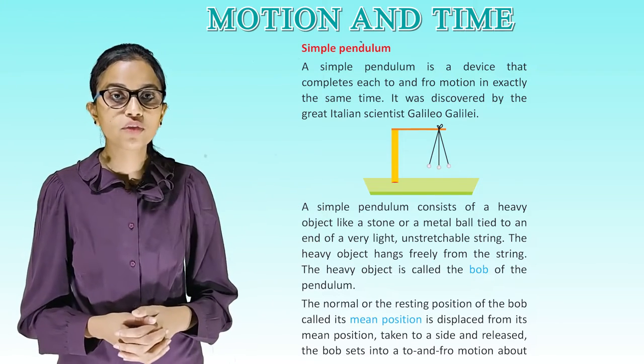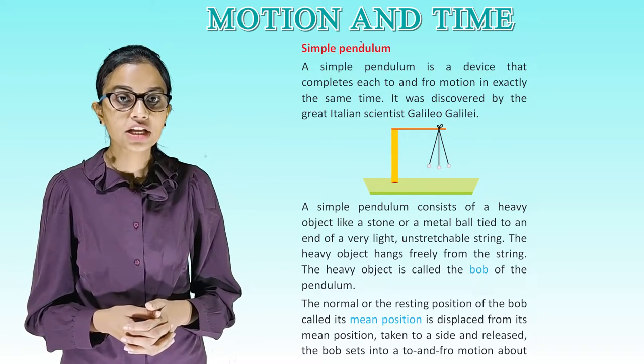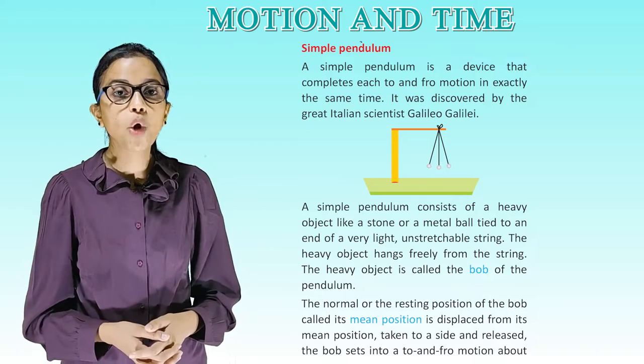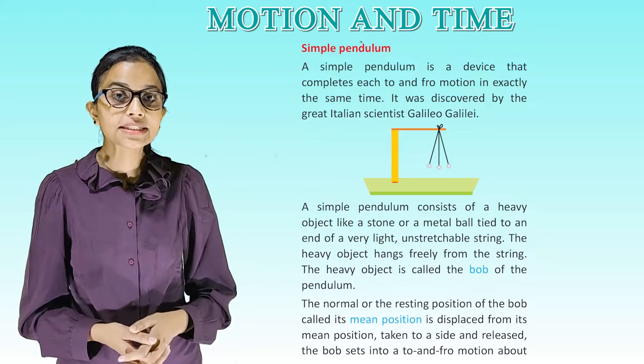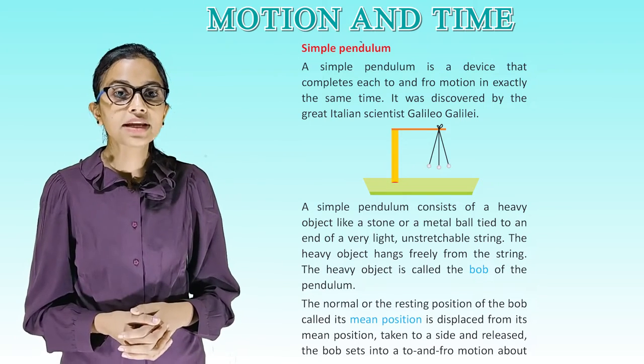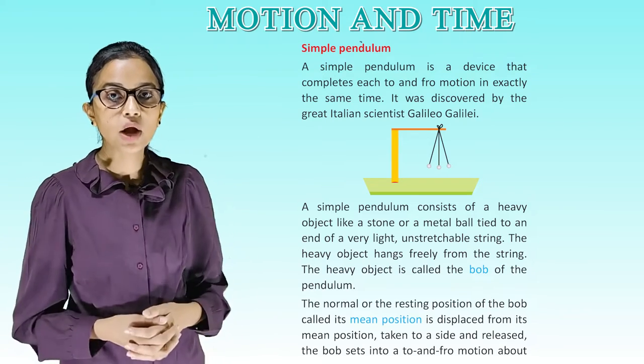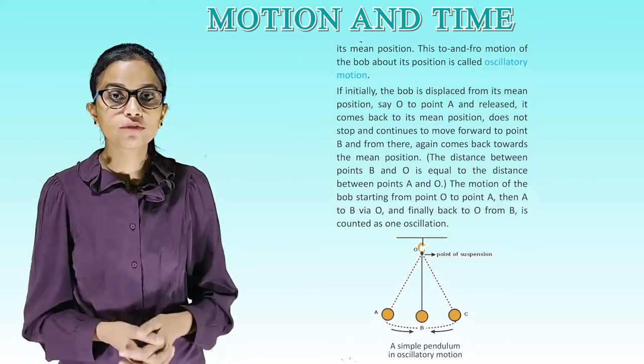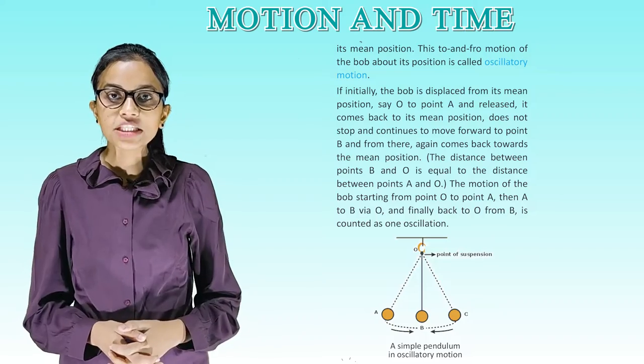Simple pendulum. A simple pendulum is a device that completes each to and fro motion in exactly the same time. It was discovered by the great Italian scientist Galileo Galilei. A simple pendulum consists of a heavy object like a stone or a metal ball tied to an end of a very light, unstretchable string. The heavy object hangs freely from the string. The heavy object is called the bob of the pendulum. The normal or the resting position of the bob called its mean position is displaced from its mean position, taken to a side and released. The bob sets into a to and fro motion about its mean position.